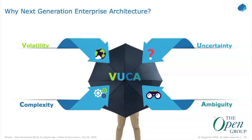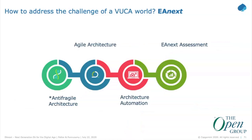At an overarching level, there were three areas we started to focus on. One was the idea of anti-fragile architecture — I'll spend some time on that in just a minute. Second was agile architecture, which I'll talk about particularly in the context of digital-first and digital transformations. And then Prakash will talk about architecture automation. Those are really the three pillars this stands on.